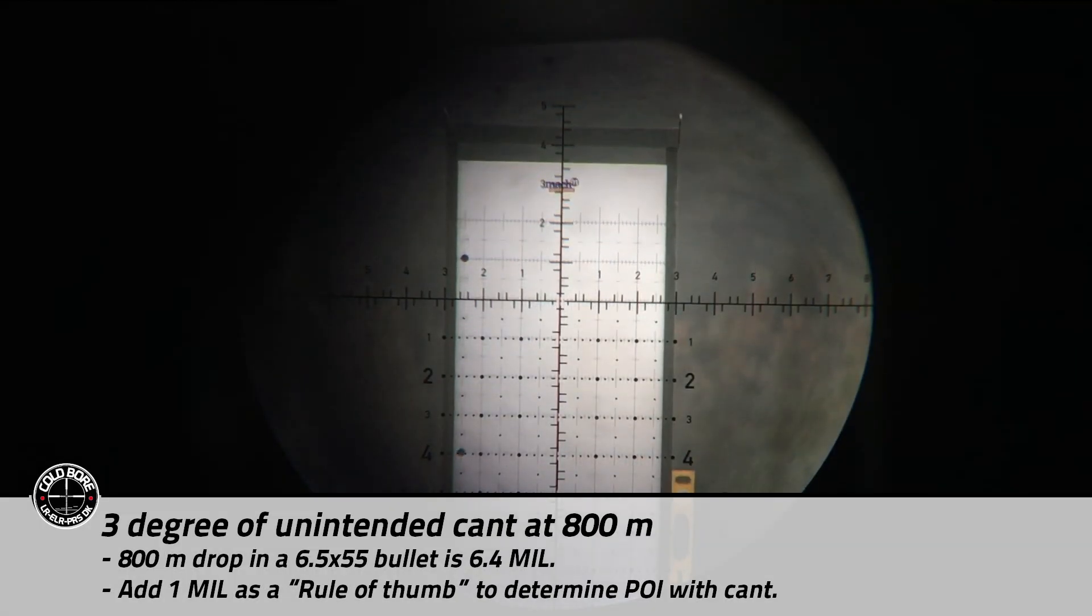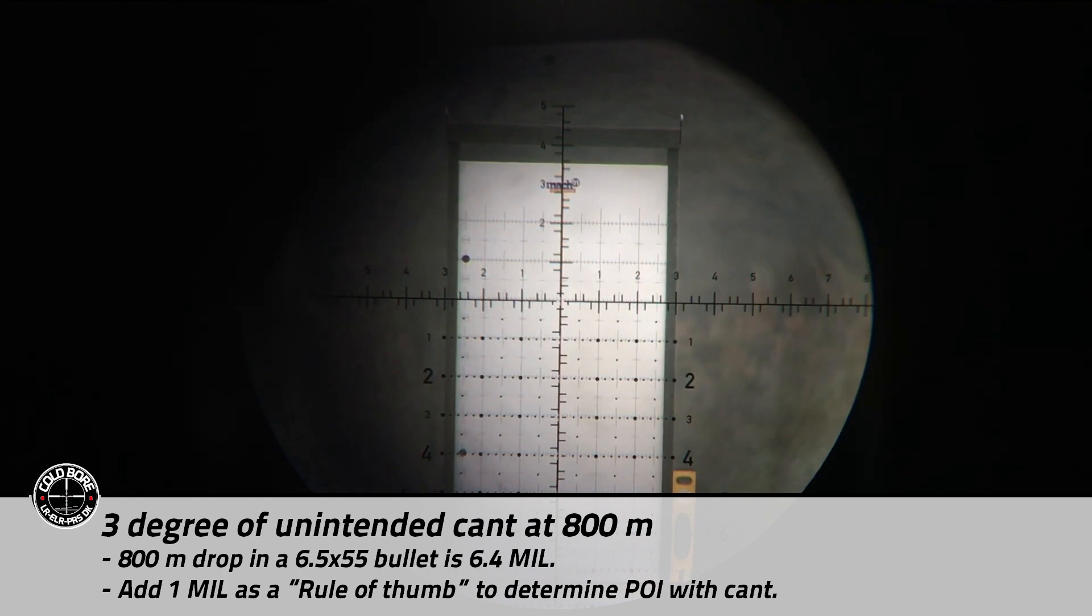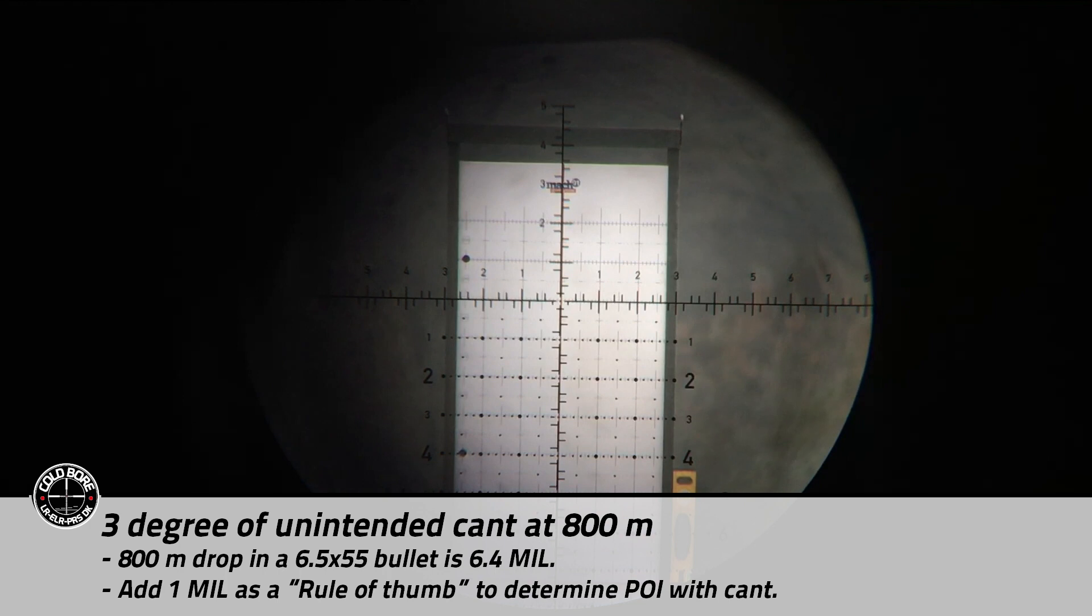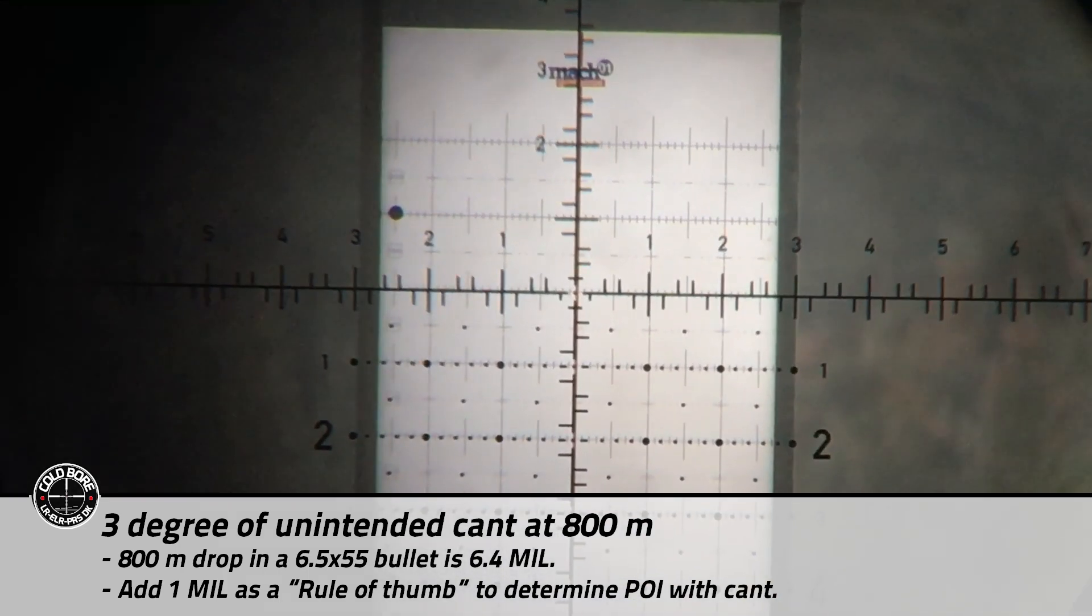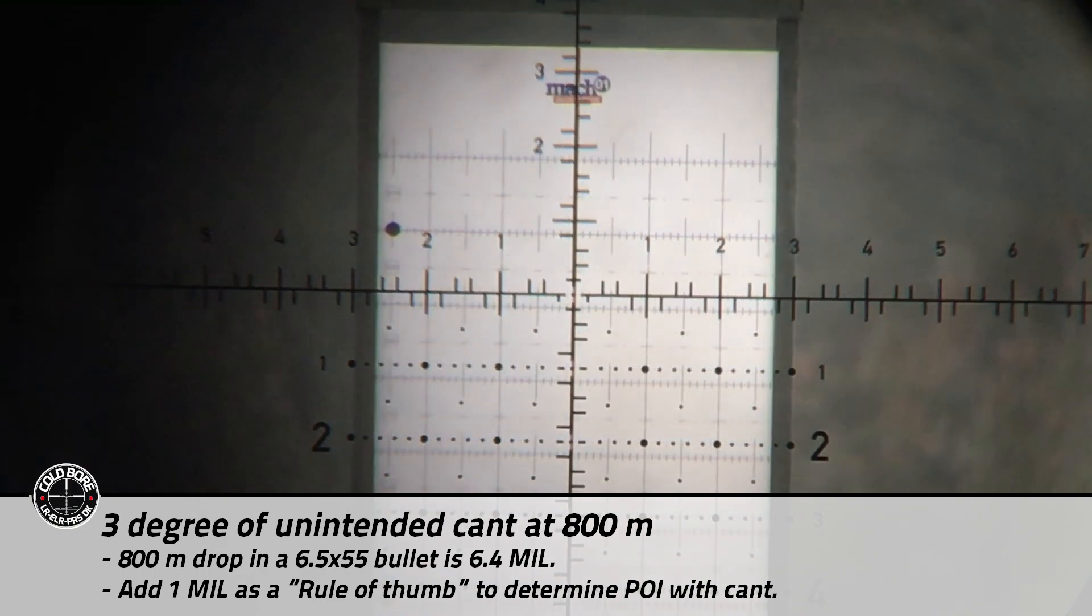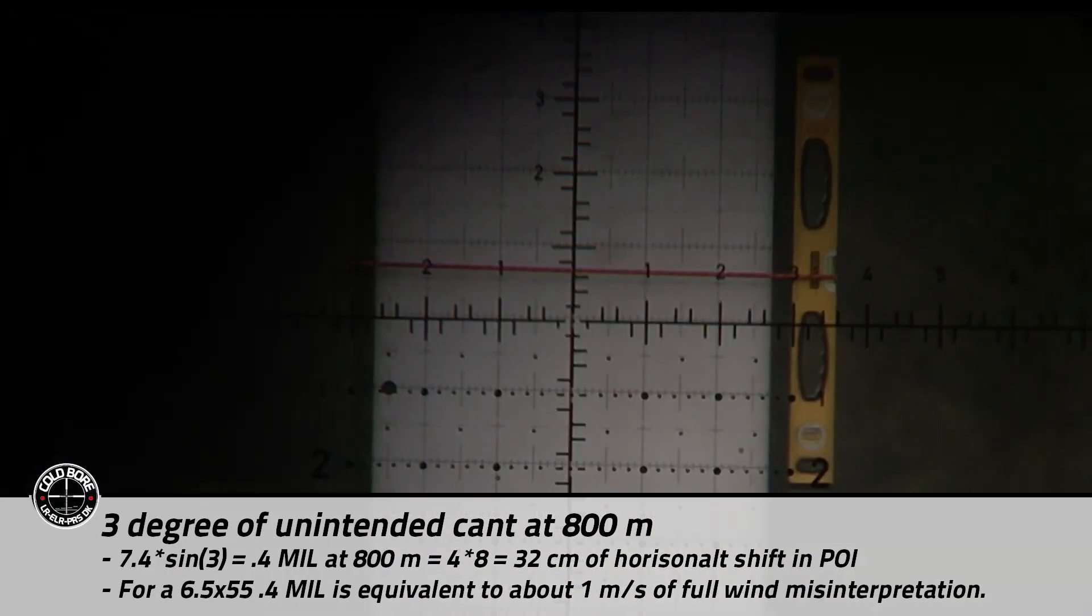Now let's look at an example where you have three degrees of unintended cant in your rifle. In this example we have 6.4 mils of elevation for an 800 meter shot and to use a cant rule of thumb for the point of impact shift we have to add one mil and use that number in our equation to determine the horizontal shift of the point of impact. As you can see it will result in a 32 centimeter horizontal shift which is the equivalent of one meter per second of full wind for a 6.5 by 55 at that range.